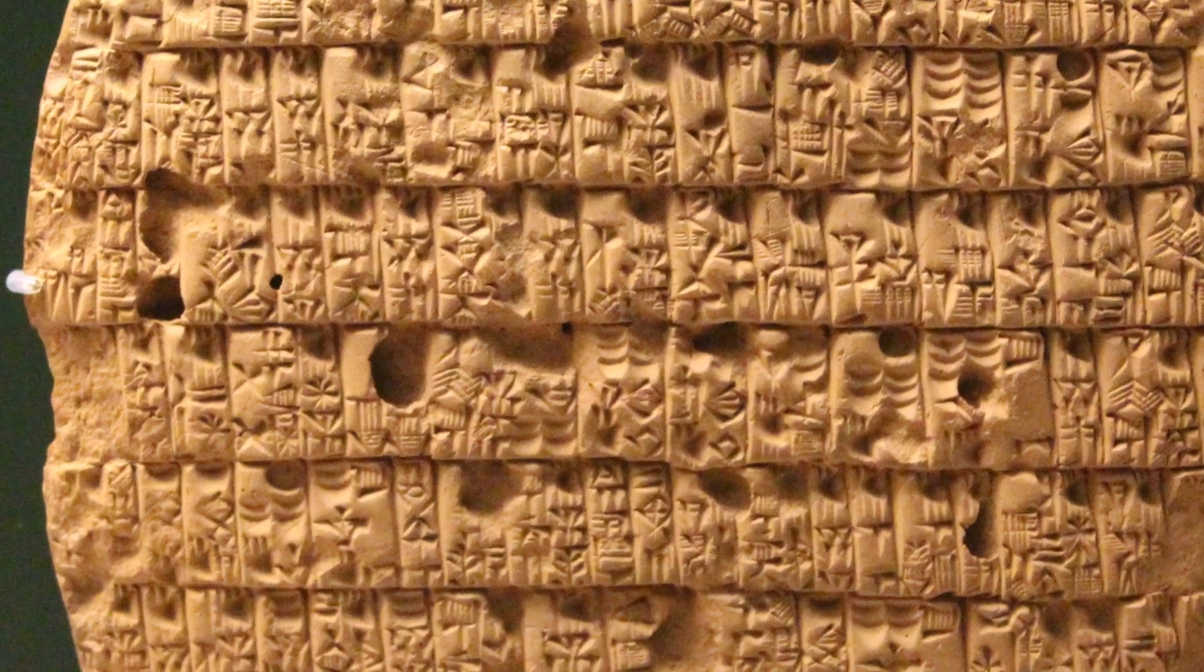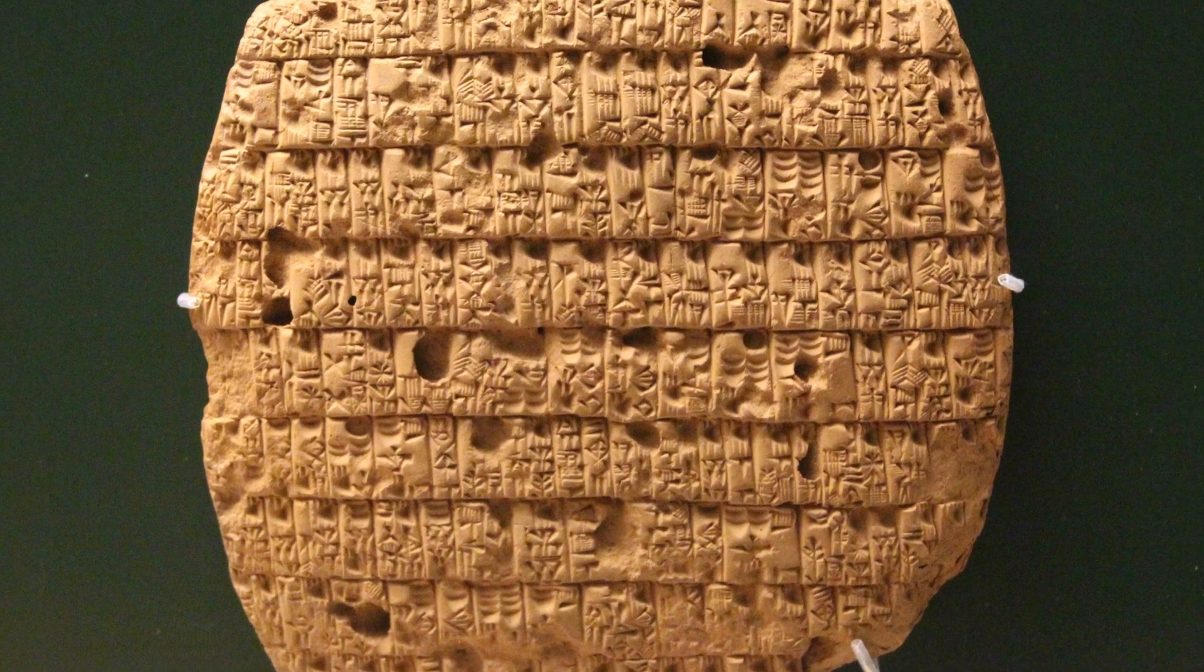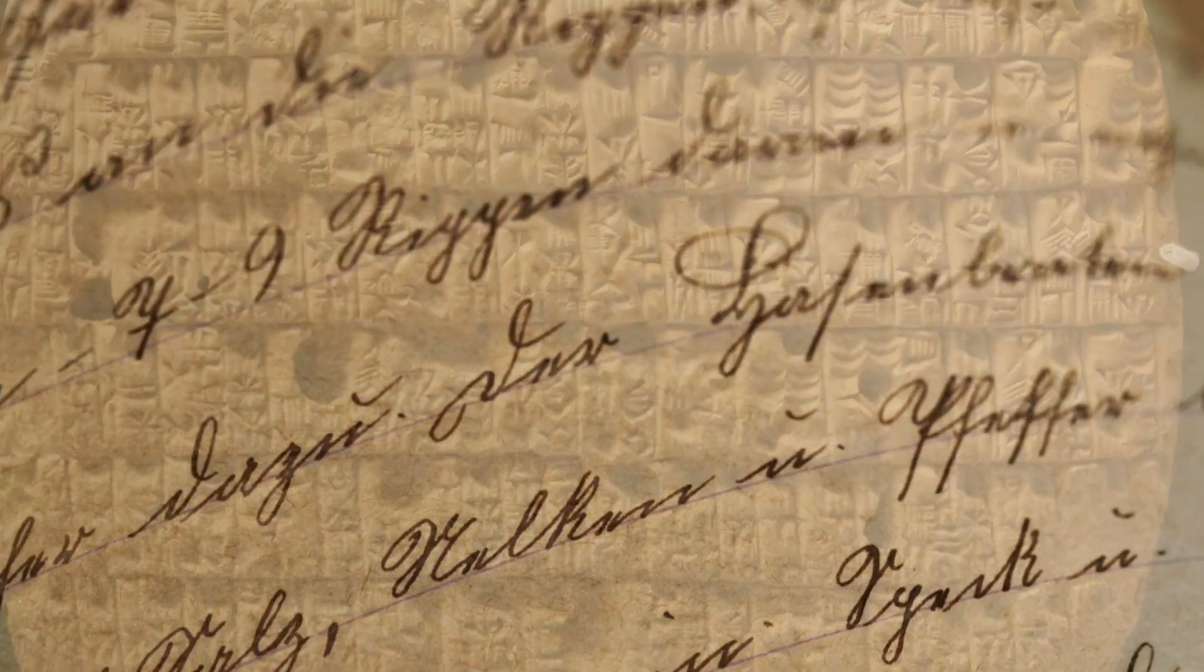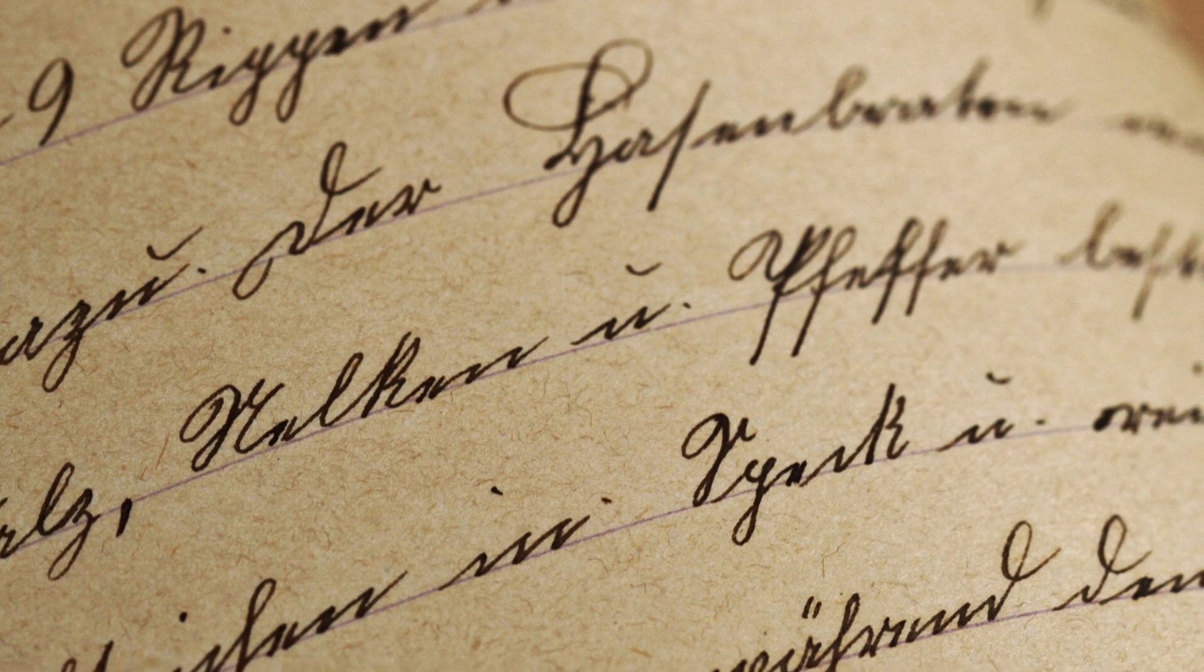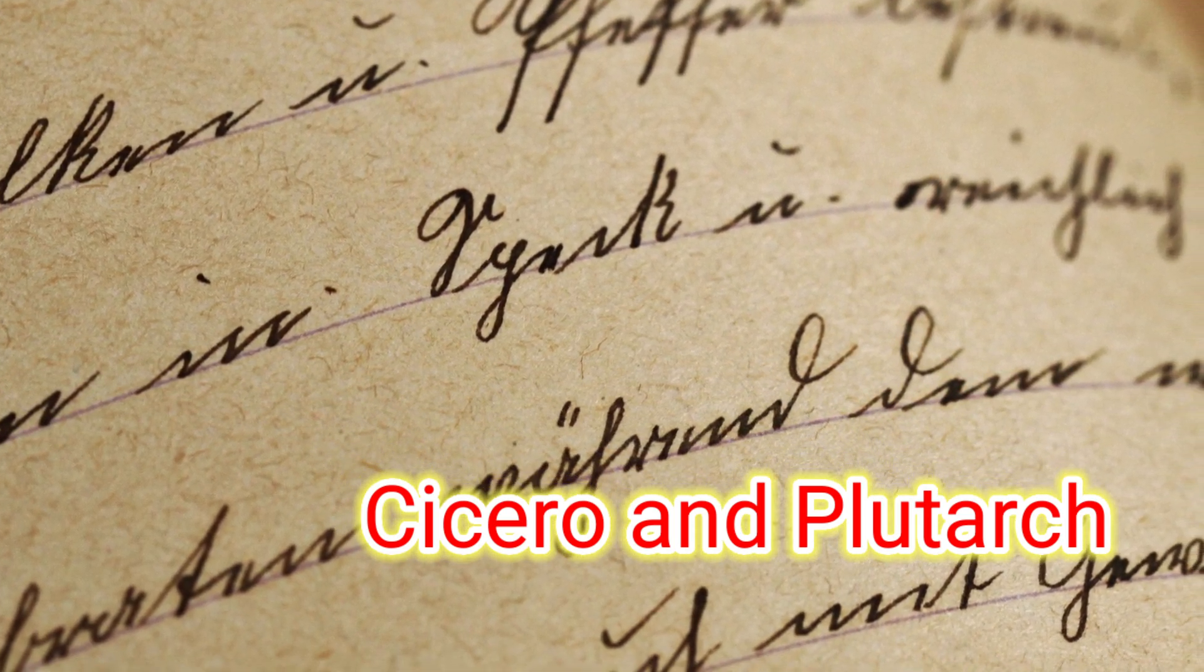Moreover, this geometrical formula existed well before Pythagoras and was used by Indians, Babylonians, and Sumerians frequently. The earliest known mention of Pythagoras in Pythagorean Theorem appears 500 years later in the writing of Cicero and Plutarch.